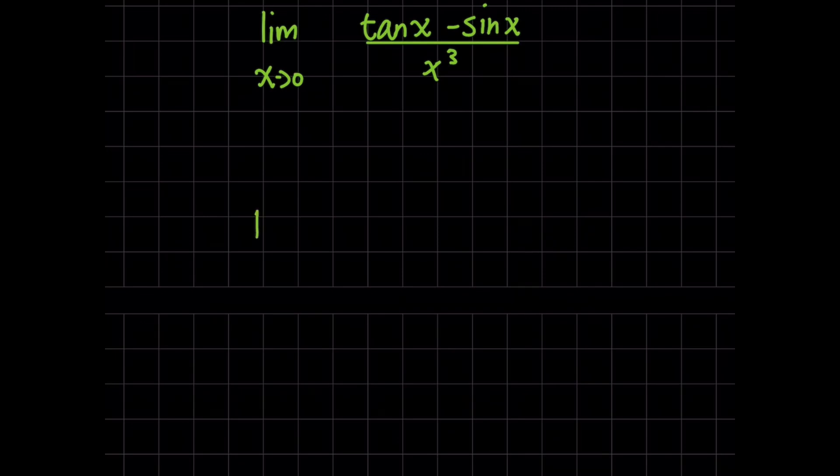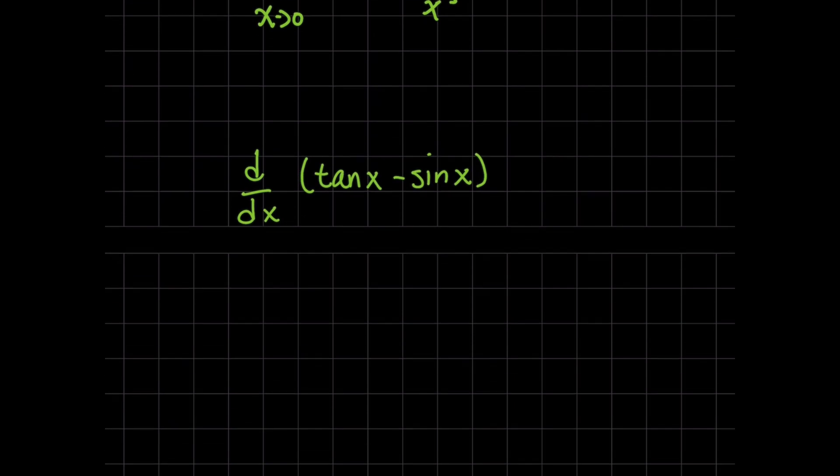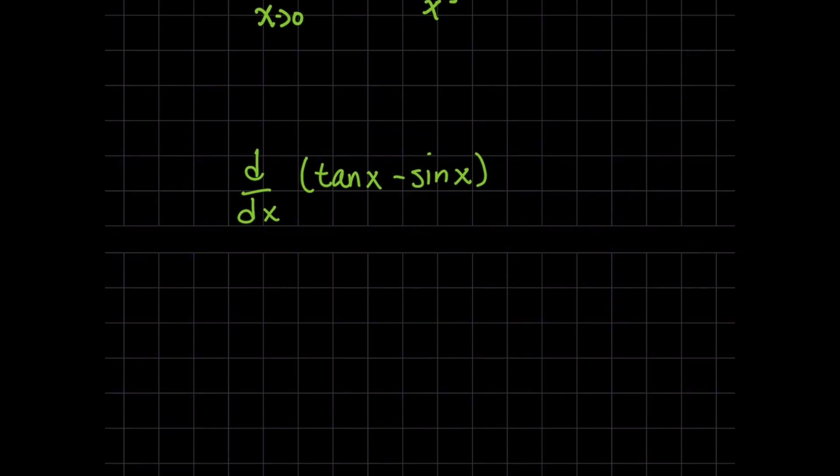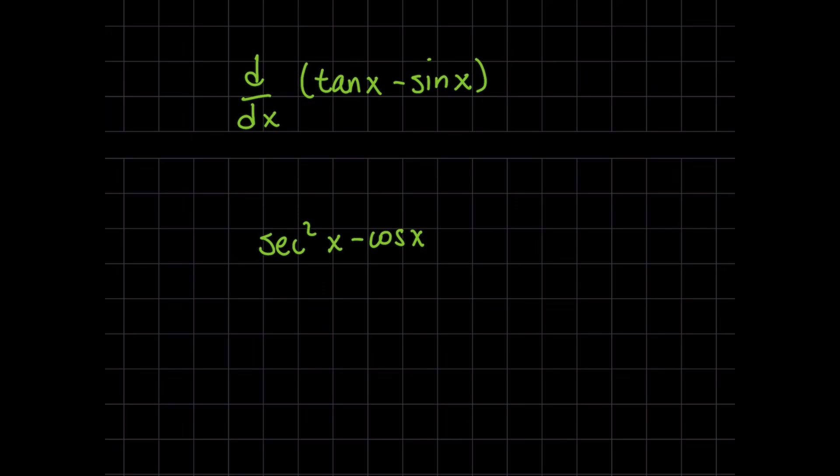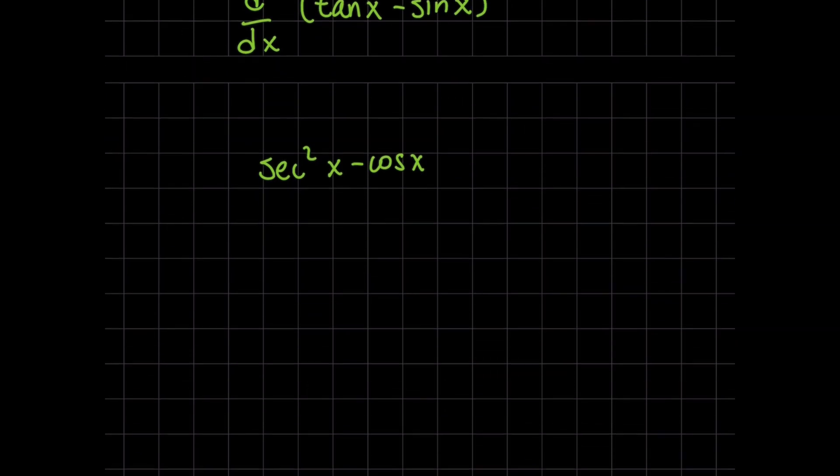So for L'Hopital's rule, I'm going to take the derivative first of this numerator, tangent of x minus sine of x. And by the way, tell me in the comments why we can use L'Hopital's rule for this limit. Now the derivative of tangent of x is going to be secant squared of x minus cosine of x. For the denominator, x cubed has a pretty simple derivative, it's just 3x squared.